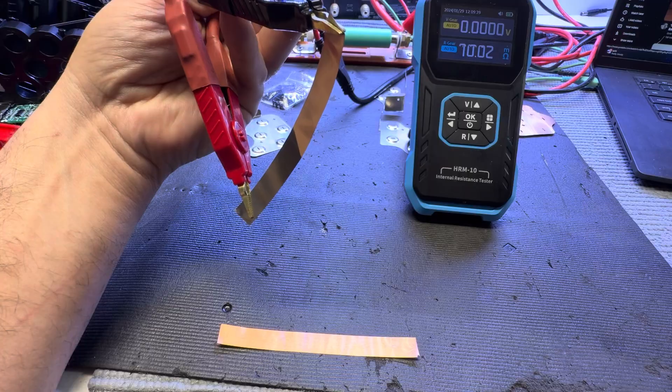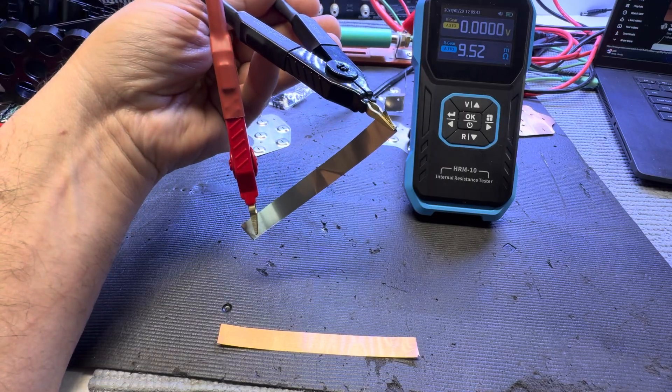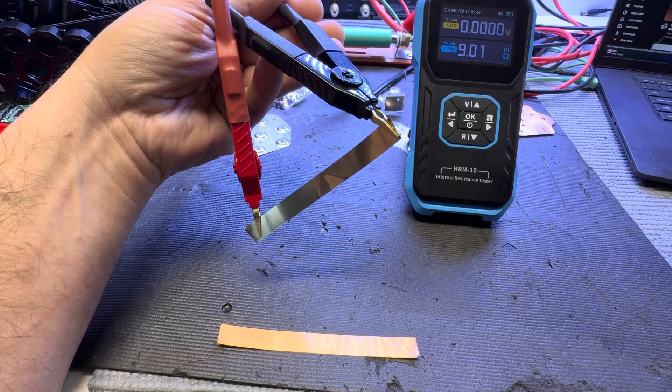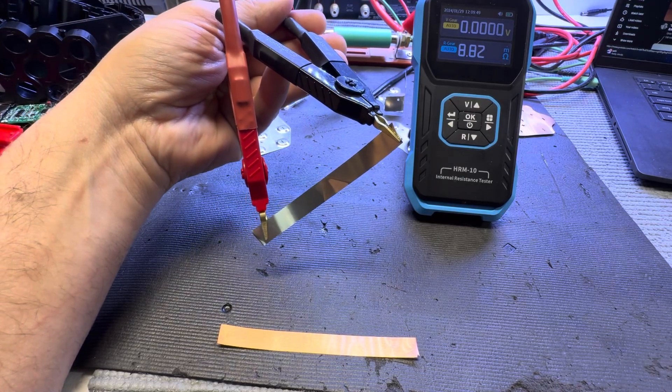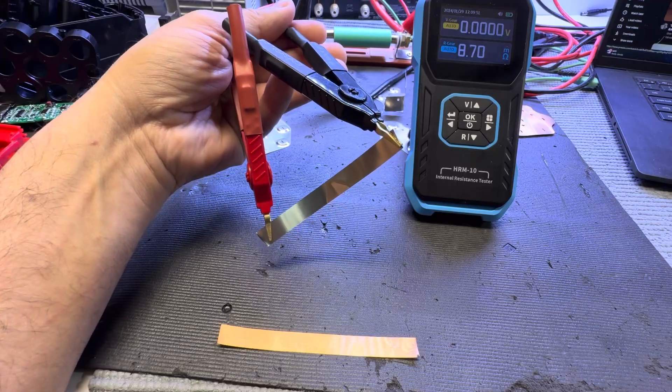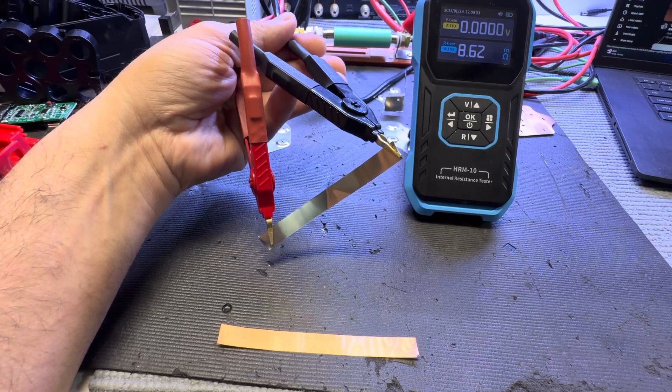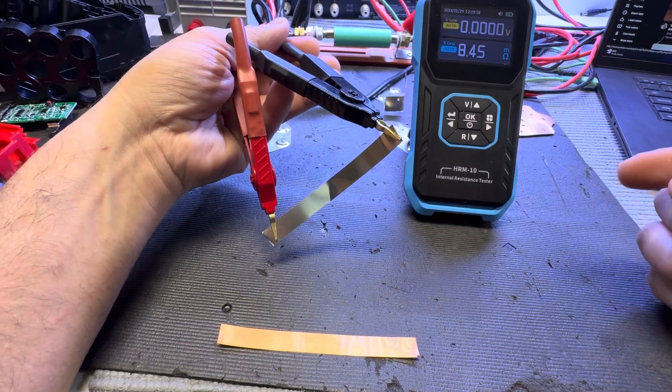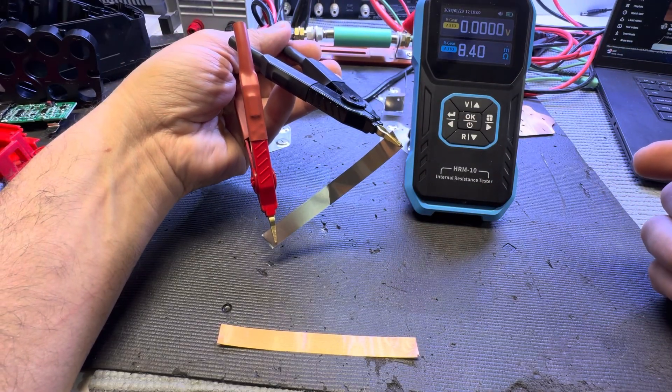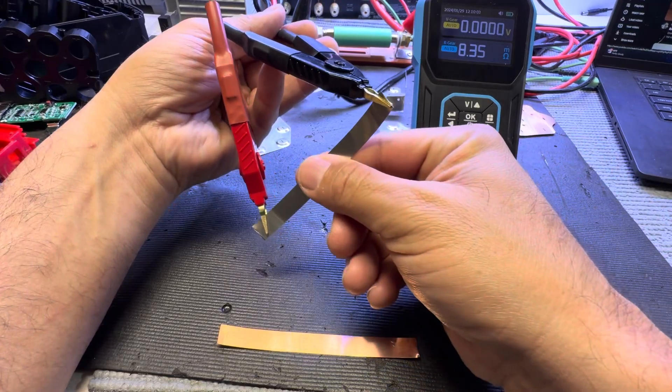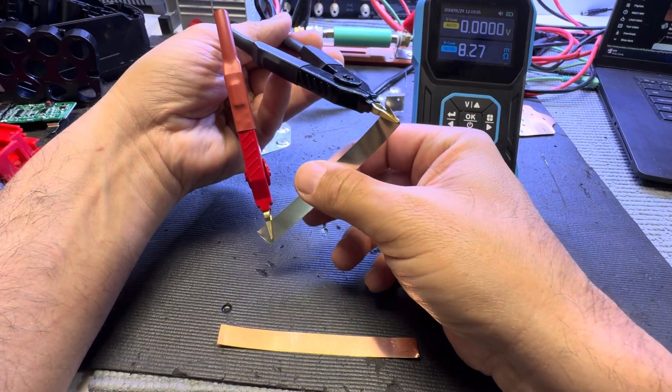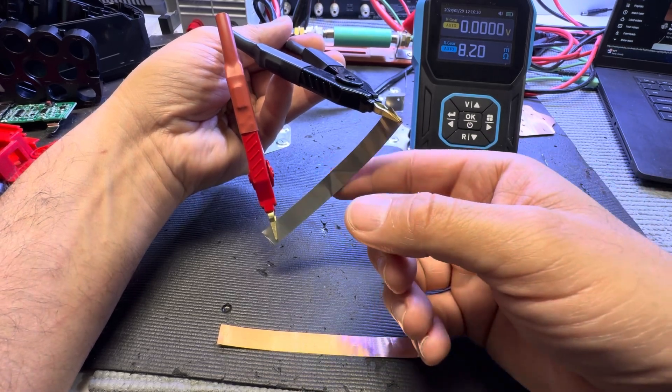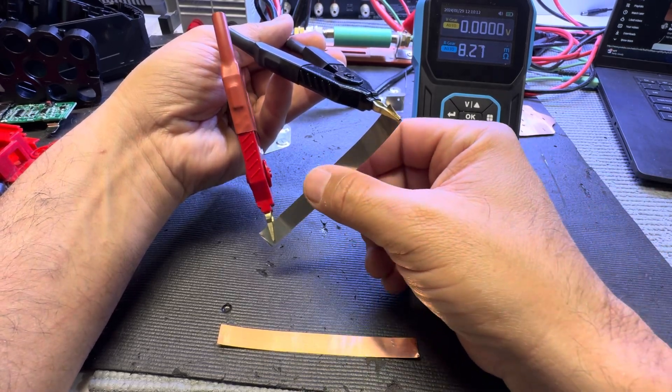To show you how IR is affected by temperature, I'm going to show you what happens when we apply heat to the metal. Look at the numbers - how they go high as the metal gets hot. Exactly the same thing happens to batteries. You see how it's going down now when it starts cooling down?